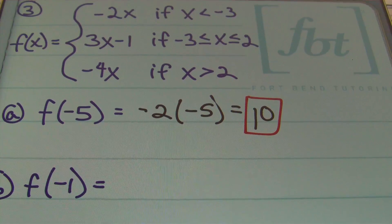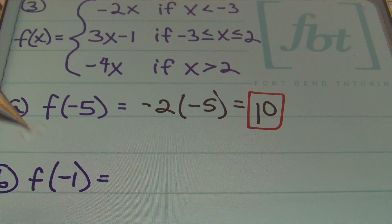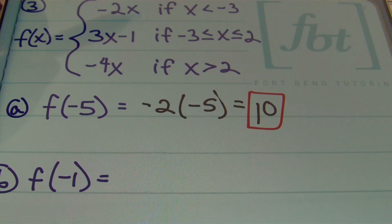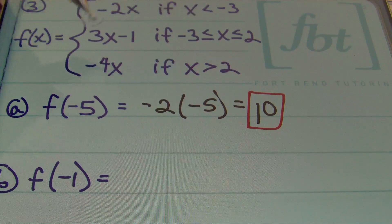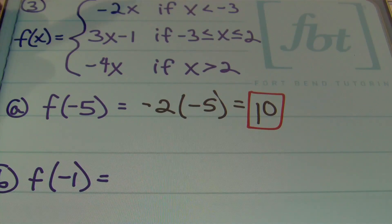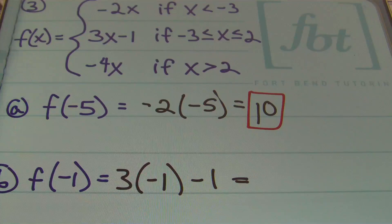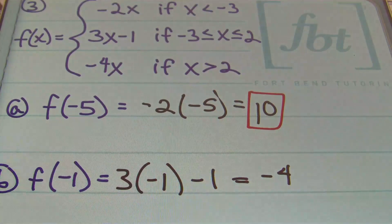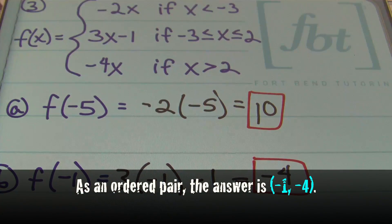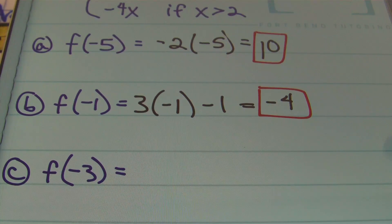For part b, x is negative one. Negative one is not less than negative three, but it does lie within the interval negative three to two, so we use the second part: three x minus one. Plugging in: three times negative one minus one. Three times negative one is negative three, and negative three minus one gives negative four.